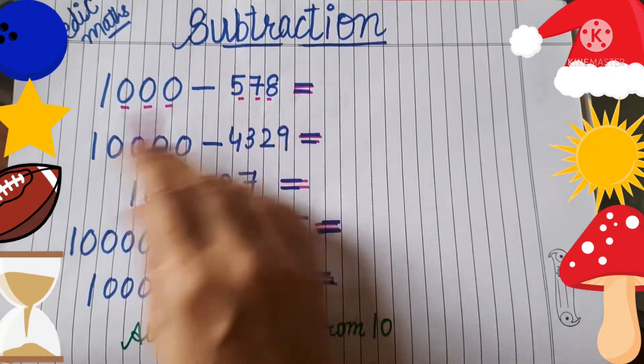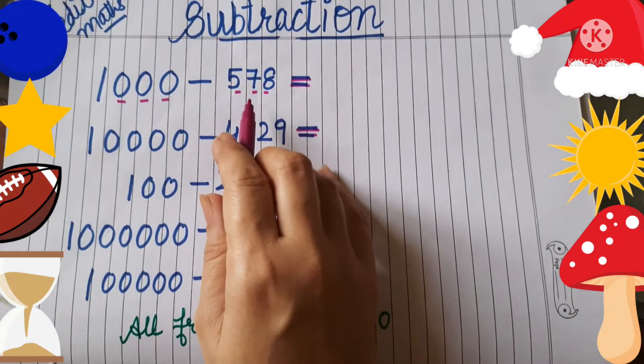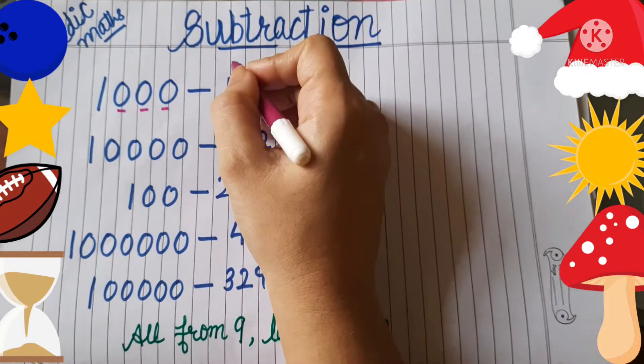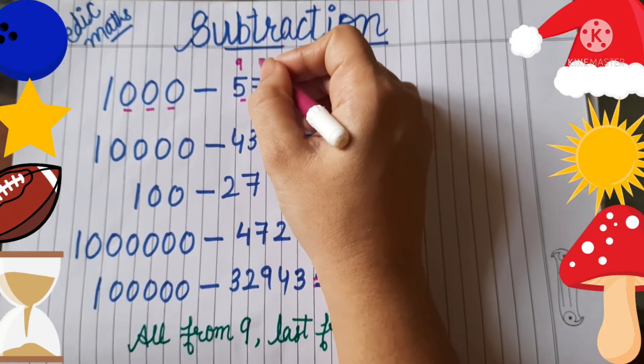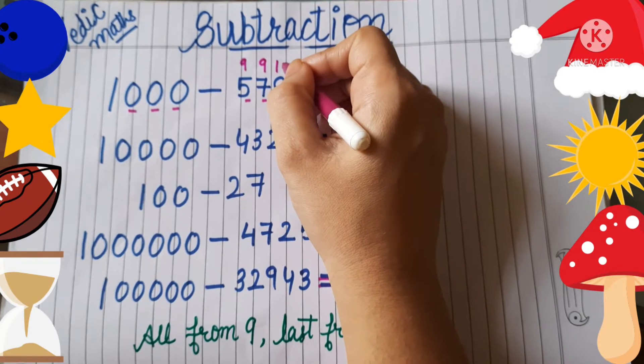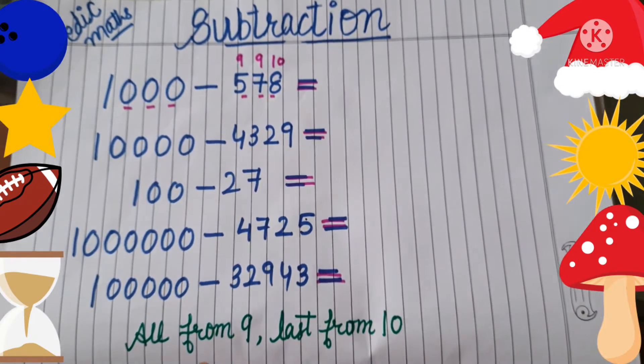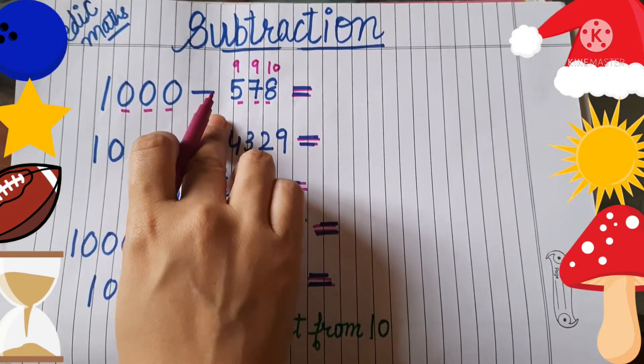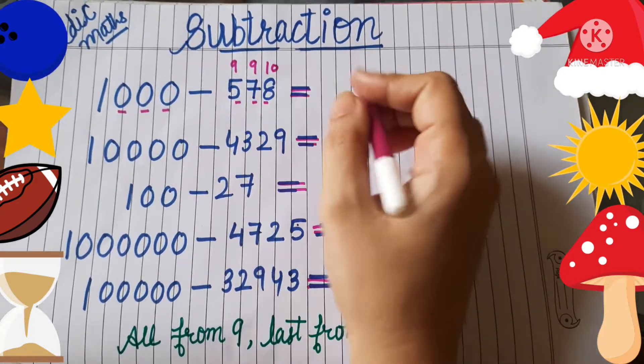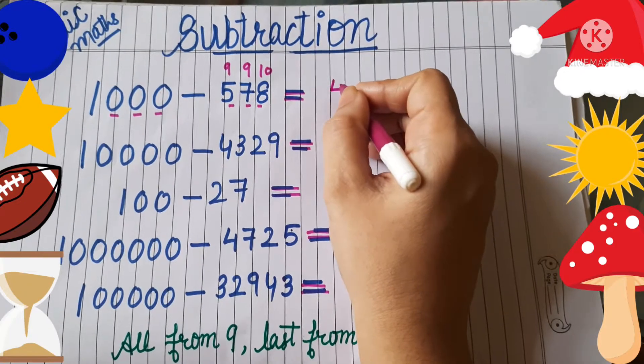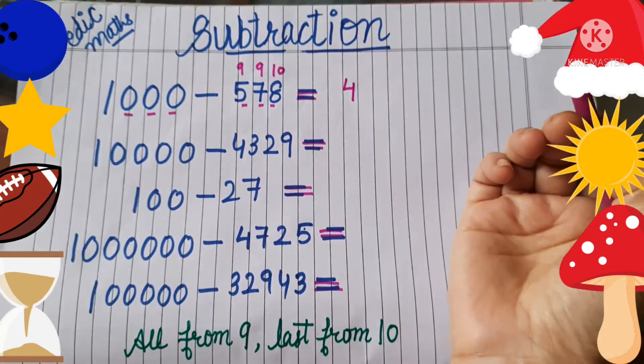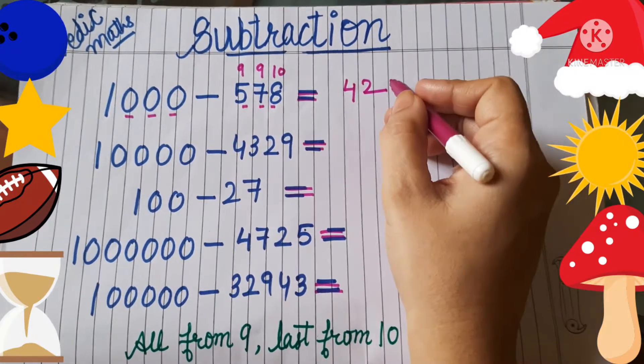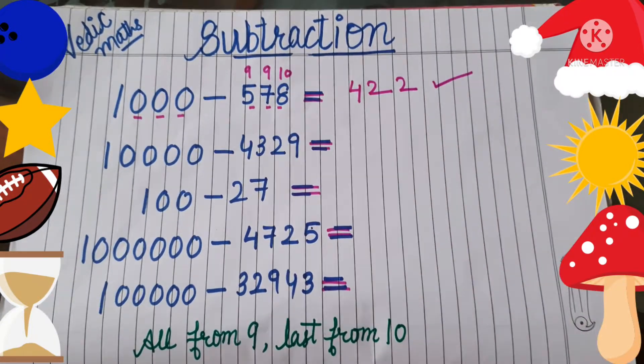We have to subtract the terms from 9, and the last number we will subtract from 10. Means you have to write upside like number 9, 9, and the last is 10. All from 9 but the last from 10. Now let's do from the right side, not from the left side. 9 minus 5 equals 4, 9 minus 7 equals 2, and the last from 10: 10 minus 8 is 2. So that's done.